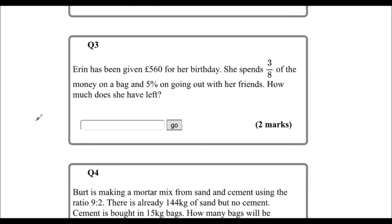Question 3. Erin has been given £560 for her birthday. She spends three eighths of the money on a bag, and 5% on going out with her friends. How much does she have left? To work out three eighths of 560, we just have to do three eighths times 560. Whenever we have the word 'of', it means times. In a calculator, just type in three eighths times 560, and that should give us £210.